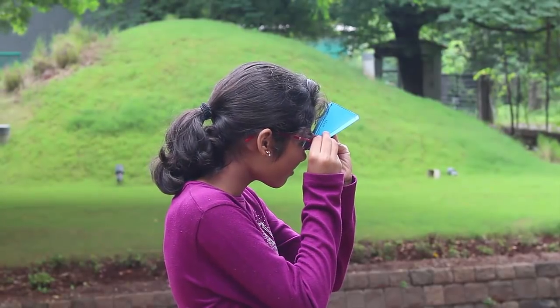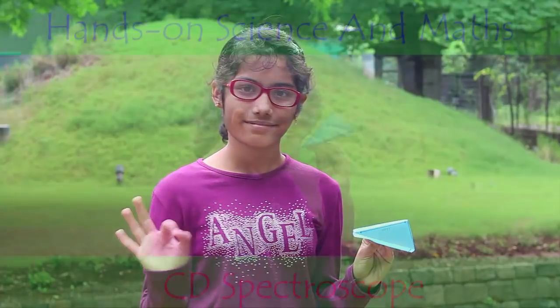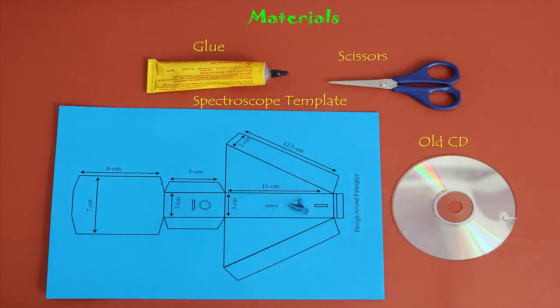As you peep through this homemade spectroscope, you will see a beautiful spectrum. The heart of this spectroscope is a piece of old CD which diffracts the light into various colors.